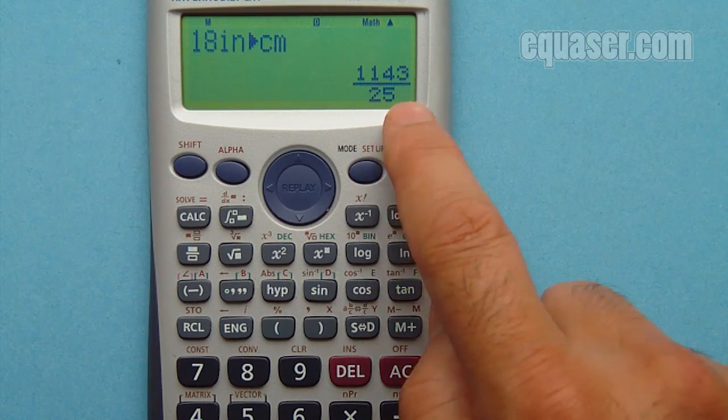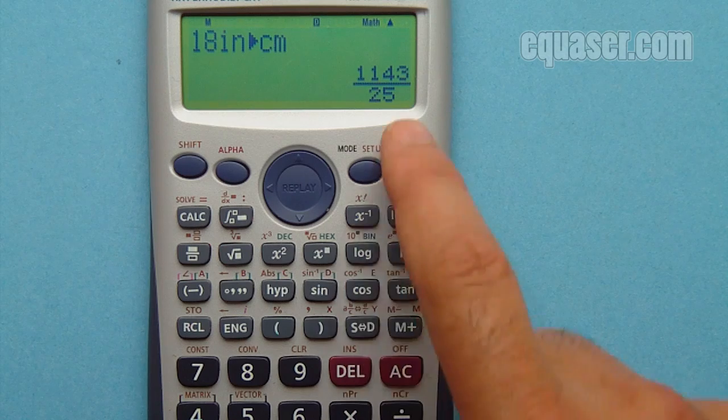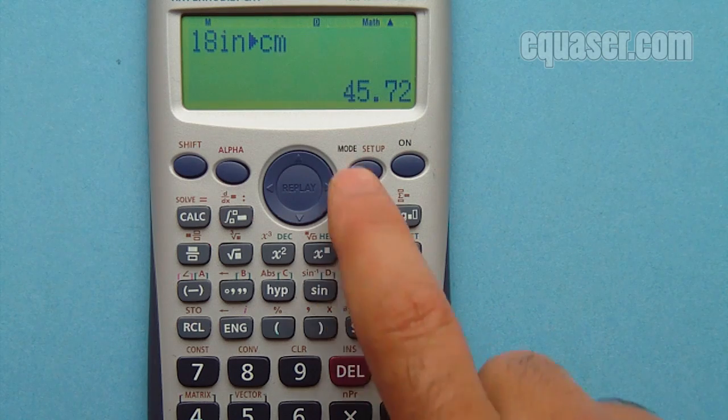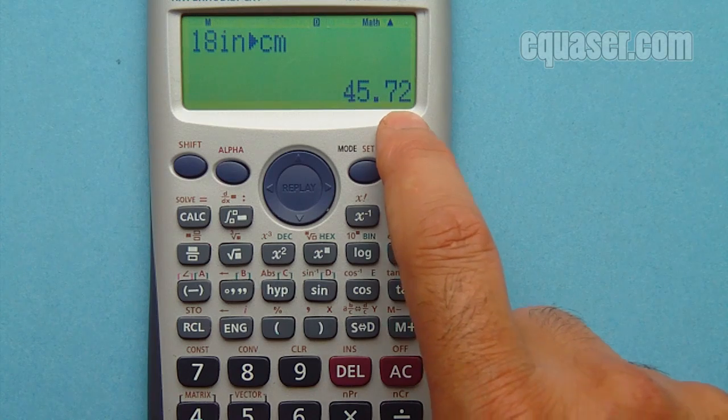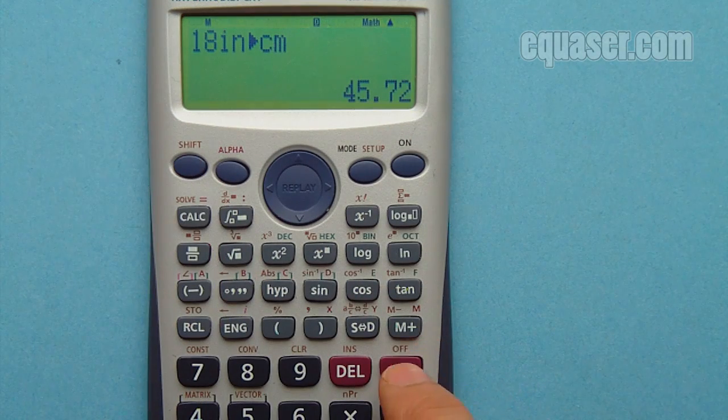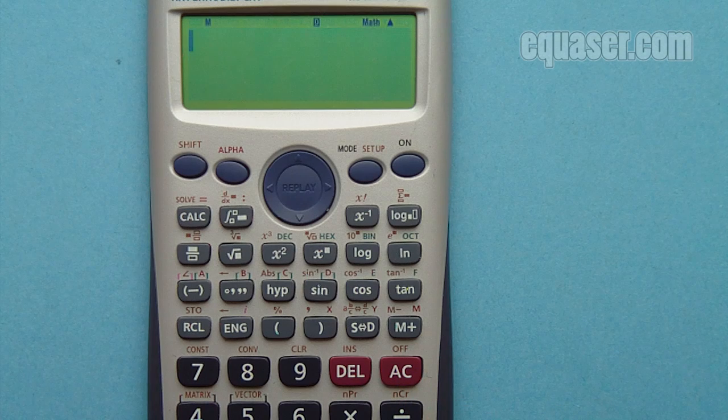The value to convert it to decimal. So 45.72 centimeters is equal to 18 inches. Now let's convert centimeter to inch.